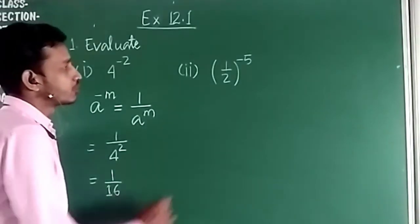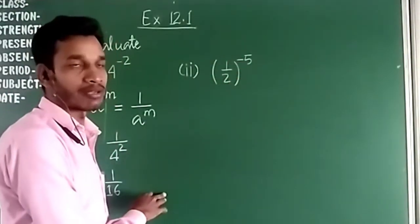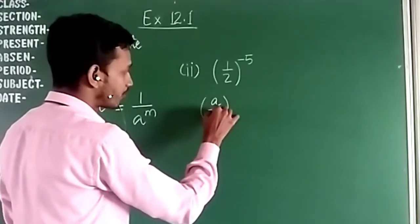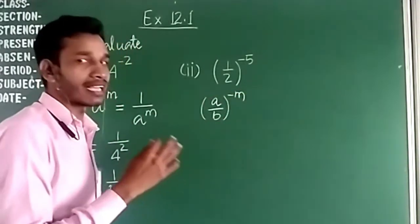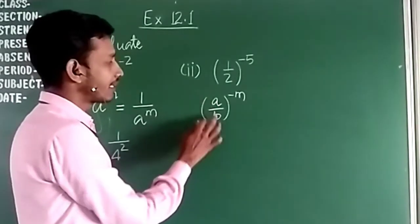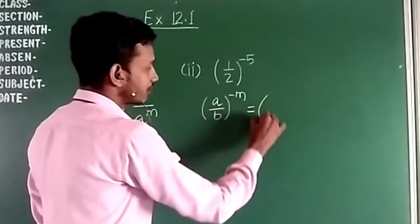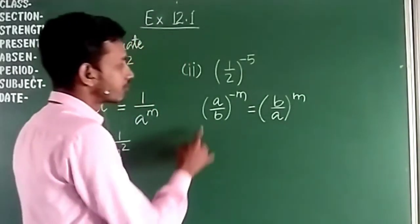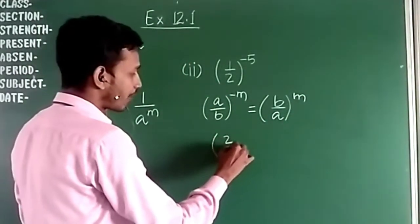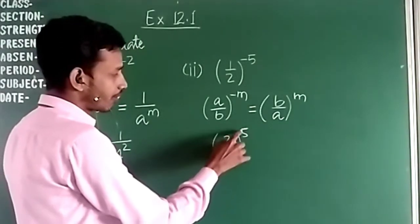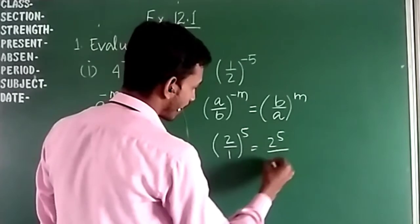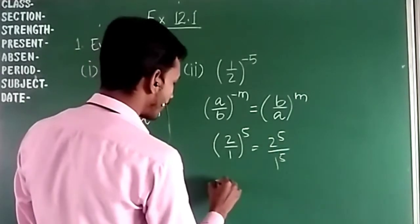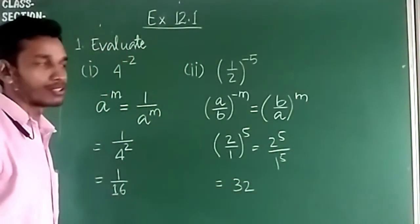The next question is (1/2) to the power minus 5. We will use the law that (a divided by b) to the power minus n equals (b divided by a) to the power n. That means we exchange numerator and denominator, and the power becomes positive. So we write (2 by 1) to the power 5. Now 1 to the power 5 is 1 and 2 to the power 5 is 32, so the answer is 32.